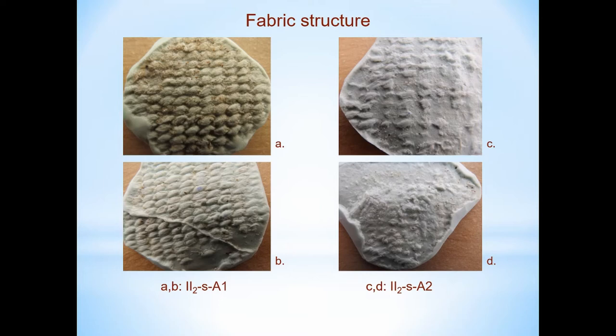On 29 impressions we were able to identify tight simple S-twist twining, where the rows of the webs are tightly packed. On 18 impressions, close simple S-twist twining was identified, where the rows are slightly separated. On two impressions we were not able to identify the weaving technique.